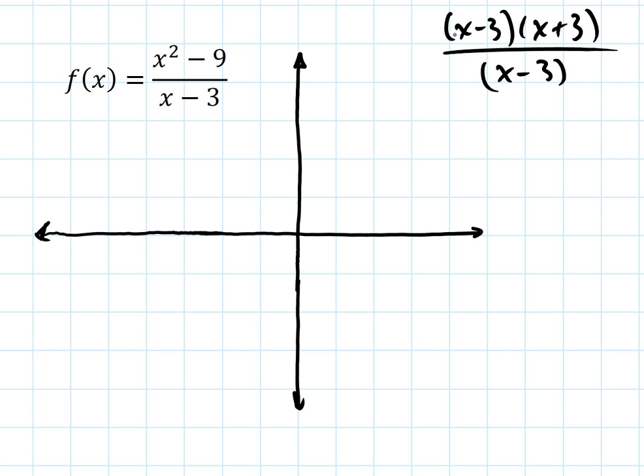So a simplified form of this function f of x is x plus 3, and that's useful for graphing this function because I definitely have a y-intercept at 3, and then I just go up 1 over 1 from there. Up 1 over 1, and then down 1, back 1, down 1, back 1, down 1, back 1. But one of the problems that I have is when x equals 3.